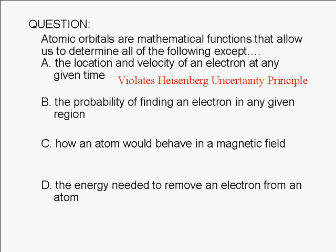If you know calculus, here's how we can find the probability of finding an electron if we know the atomic orbital that describes it. Suppose psi is the atomic orbital. We square the absolute value of the orbital, then integrate over the coordinates of the region we're interested in.